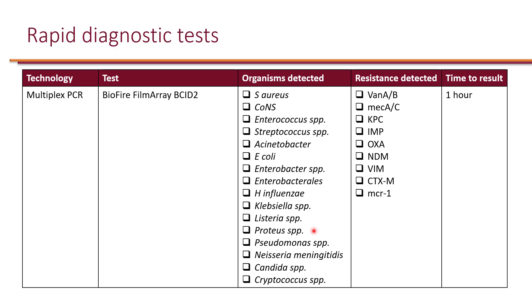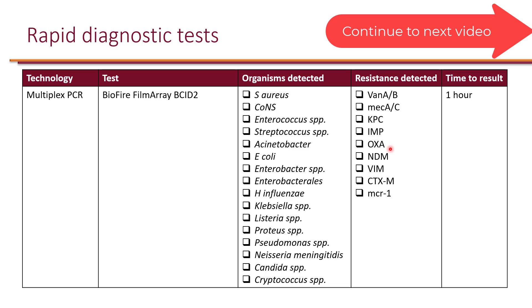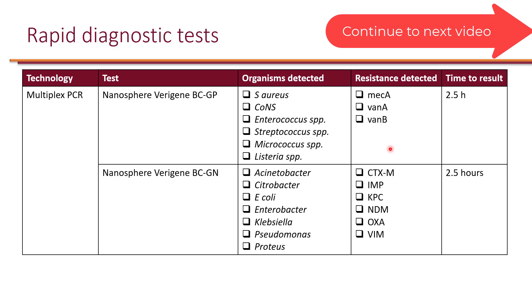Rapid diagnostic tests, such as multiplex PCR, are able to identify select organisms as well as resistance genes early on. Within 24 hours of infection, these results can be available. If one of these resistance genes is identified and the empiric treatment is not covering that specific resistant organism, then the treatment can be escalated accordingly.